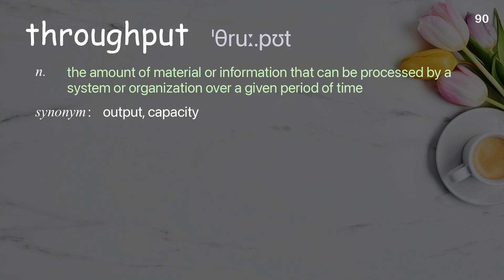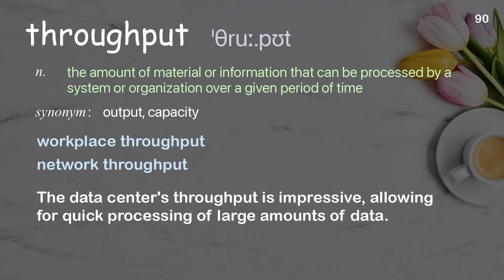Throughput: the amount of material or information that can be processed by a system or organization over a given period of time. Examples: workplace throughput, network throughput. The data center's throughput is impressive, allowing for quick processing of large amounts of data.